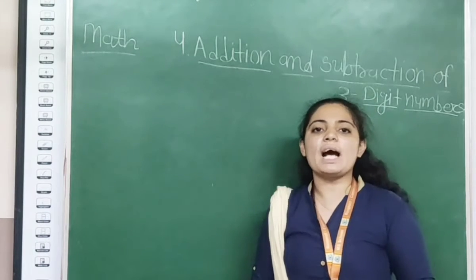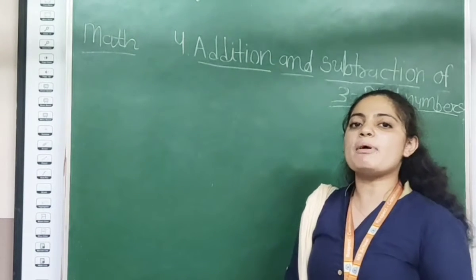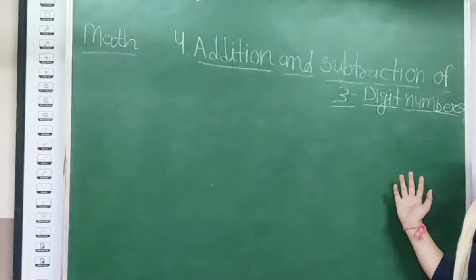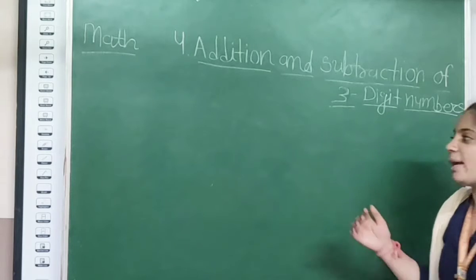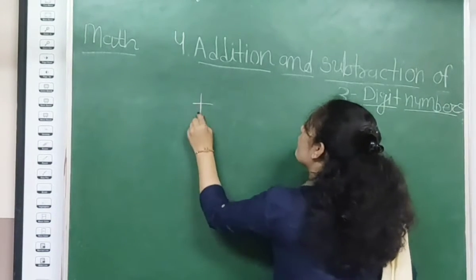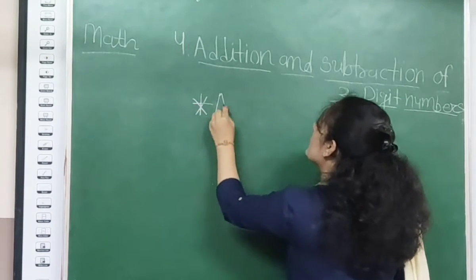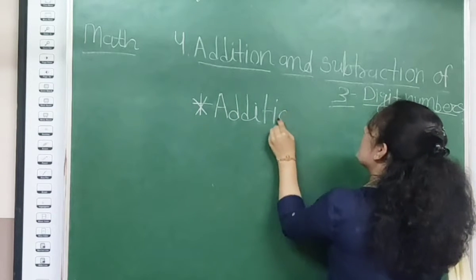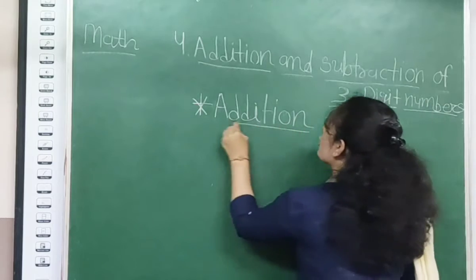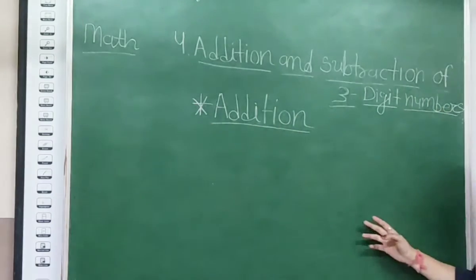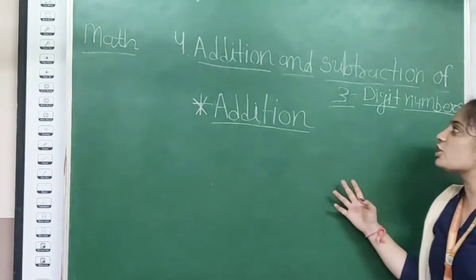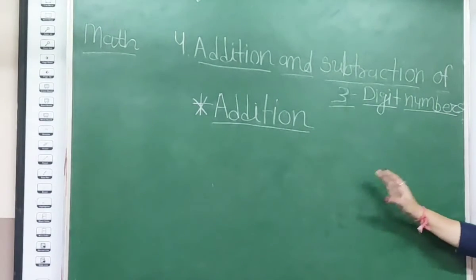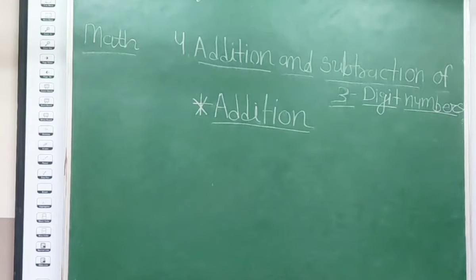So students, we are starting chapter number 4 — addition and subtraction of 3 digit numbers — with our first main topic, which is addition. Yes students, in chapter number 4 our first topic is addition.